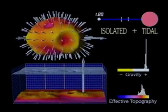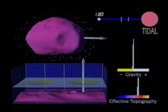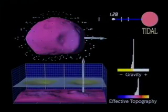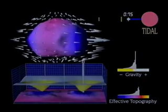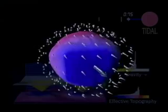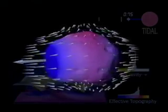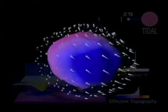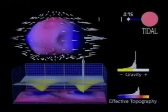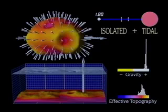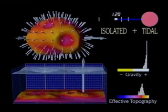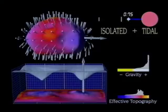Now only the tidal effect of Mars is shown. As Phobos approaches Mars, the tidal forces become large and point away from Phobos at the points nearest and farthest from Mars. Gravity and tidal forces are added together to show the effective topography as Phobos approaches Mars. As distance decreases, down becomes the ends of the moon nearest and farthest from Mars.